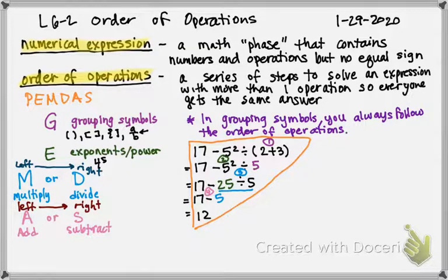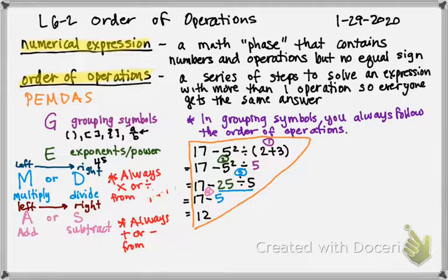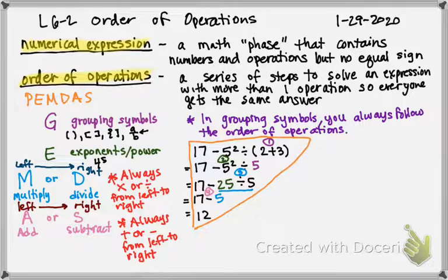I want to emphasize again: always multiply or divide from left to right — sorry, left to right — and always add or subtract from left to right. So basically, when you get down to only having adding or subtracting, you just do the problem in order from left to right. Real simple.